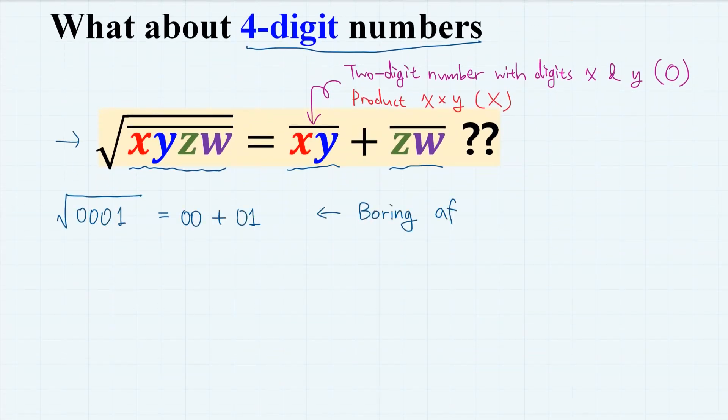Of course, you can think of trivial or boring examples like square root of 0001 equals 00 plus 01, which is not even a four-digit number really. But are there actual proper four-digit numbers? Well, let's find out.